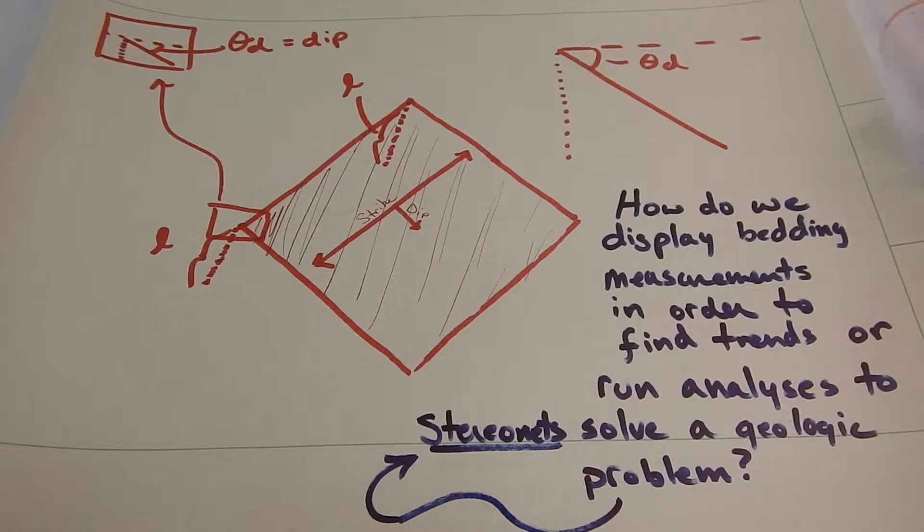So at Ben Burton Park, remember we were using our Brunton compasses to take the strike and dips of bedding planes, which are both joints and fractures, as well as foliation. Today we're going to learn how do we put those bedding planes, as well as lineations, which we'll talk about later, into a format where we can run analyses on them to solve a geologic problem or find trends in the data. So first, let's go over strike and dip.